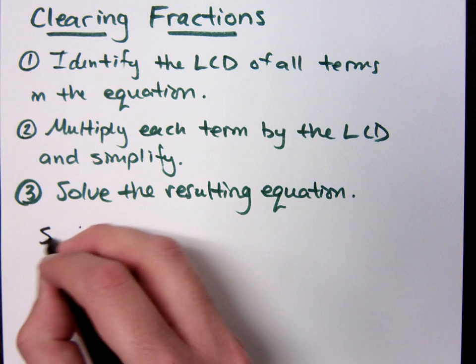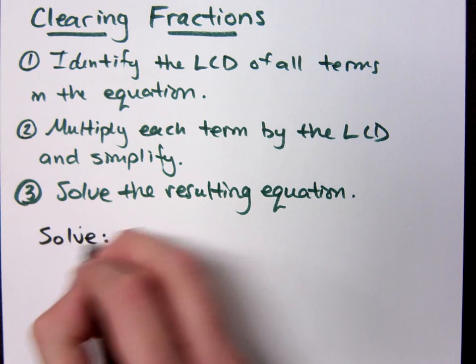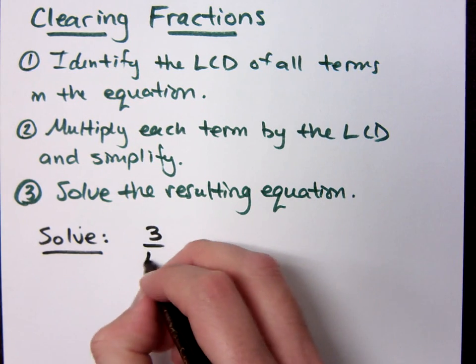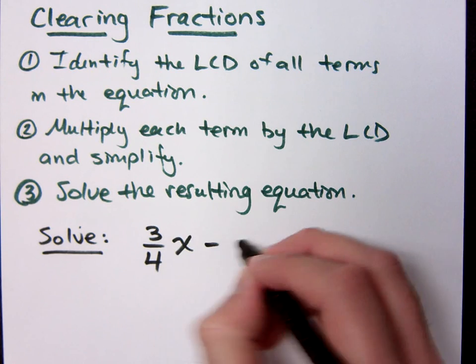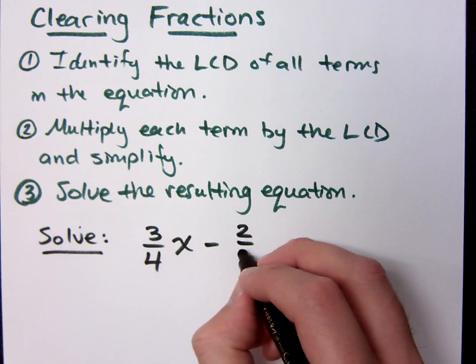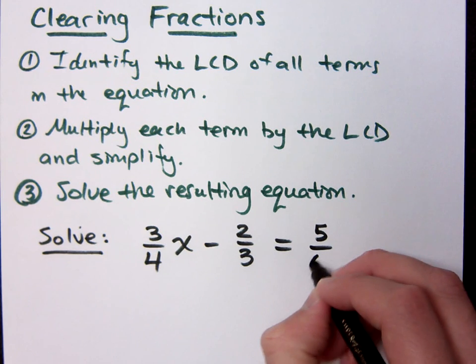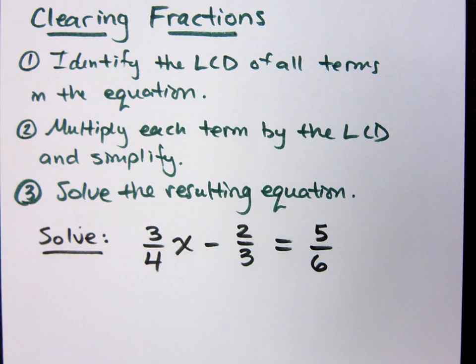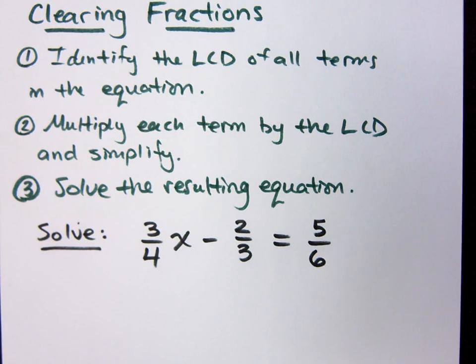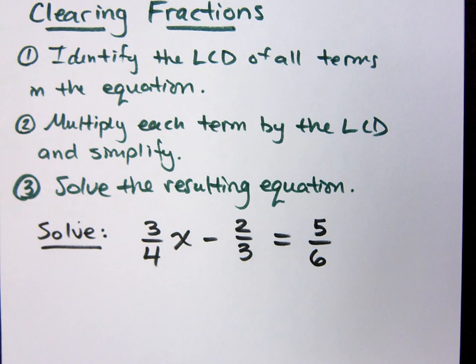If I ask you to solve this: 3 fourths x minus 2 thirds equals 5 over 6. This is an equation. It contains fractions. And now we're kind of scared, right? What do we do? Well, look at the steps that I give you here. Find the LCD for everything in this problem. What's the LCD?